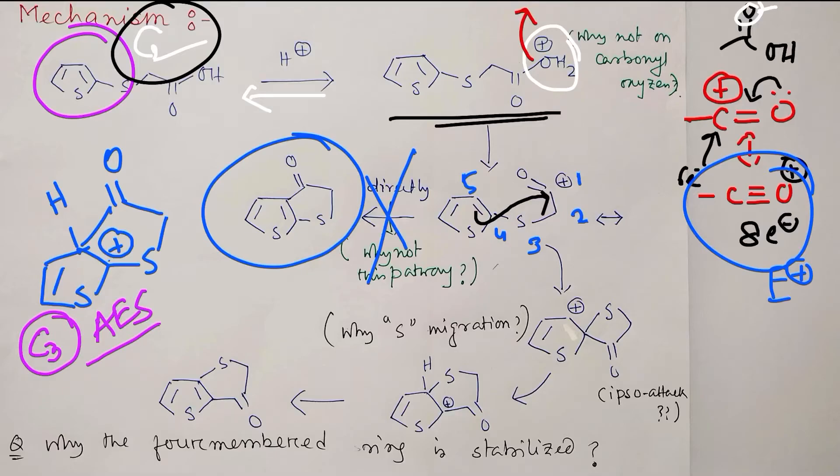Instead of that, as I told, it prefers C2 substitution. So what will happen? This will attack in this way - C2 - so positive charge will come here. And what is the advantage? This positive charge is resonance stabilized. How? One canonical form you may draw in this way: the positive charge comes here. There is another canonical form with involvement of sulfur.